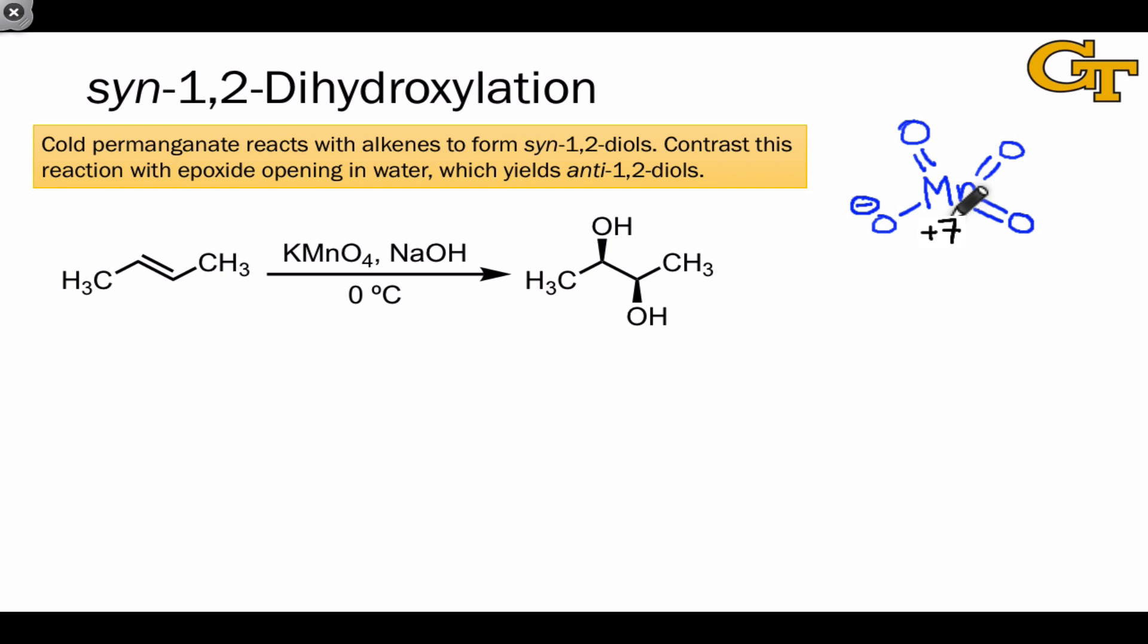This anion contains manganese in the plus-seven oxidation state, and so it would love to accept an electron pair to lower its oxidation number.